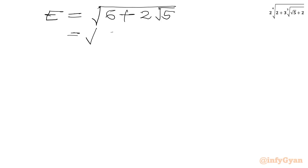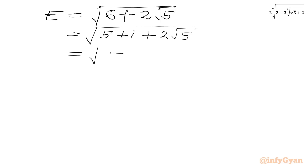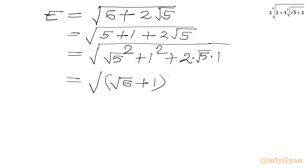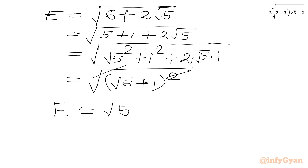We can split 6 as 5 plus 1, so we have square root of (5 plus 1 plus 2 root 5). Writing 5 as (root 5) squared and 1 as 1 squared, and noting 2 times root 5 times 1 gives the 2ab term, this is a perfect square: (root 5 plus 1) squared. So we can write square root of (root 5 plus 1) squared, which equals root 5 plus 1.